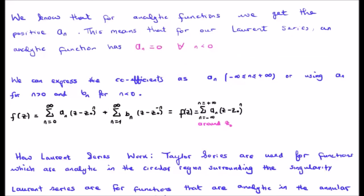For analytic functions we get the positive a_n's. This means for our Laurent series an analytic function has a_n equal to zero for all n less than zero. In other words the Laurent series is the generalized version of the Taylor series such that when your function is analytic all the a_n's with n less than zero go to zero. We can express the coefficients as a_n going from negative to positive infinity, or using a_n for n greater than zero and b_n for n less than zero — two different ways of writing it.